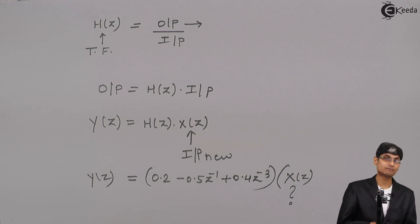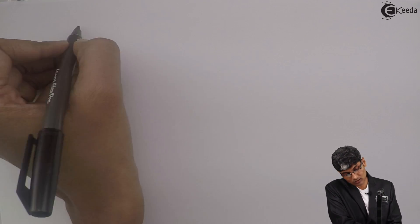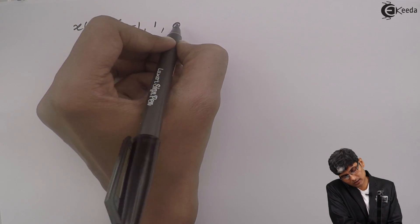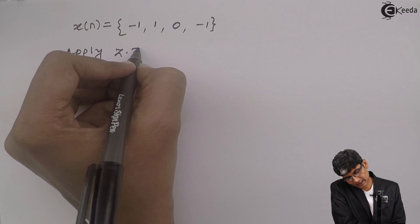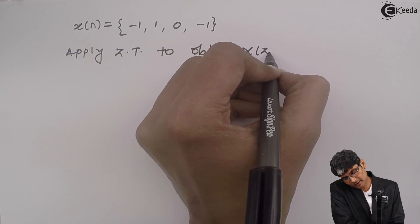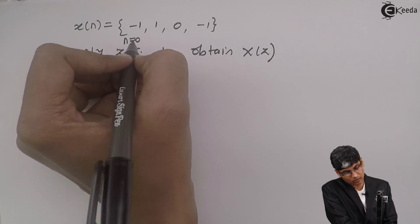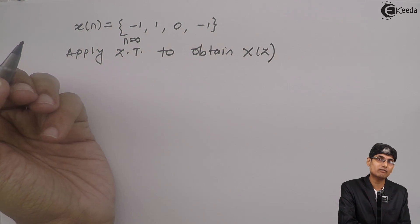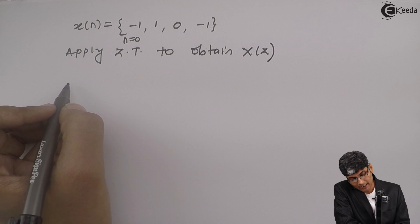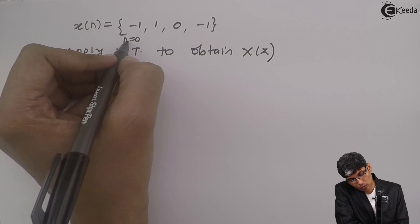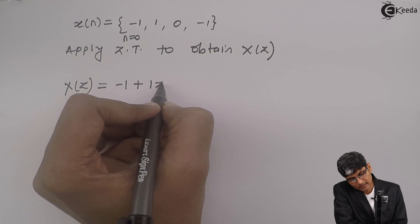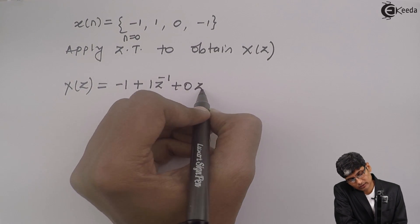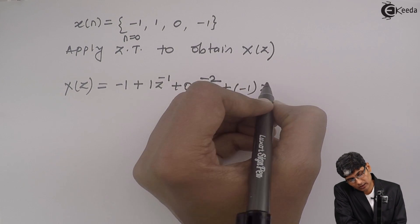The transfer function is 0.2 - 0.5z⁻¹ + 0.4z⁻³. I need to multiply this with X(z). From the given sequence, x(n) is given as -1, 1, 0, -1. Applying Z-transform with n=0 as the origin by default, X(z) = -1·z⁰ + 1·z⁻¹ + 0·z⁻² + (-1)·z⁻³.